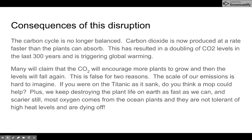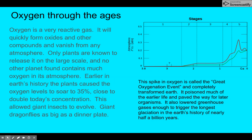Also, we aren't planting more life — we're taking it away as fast as we can. Scary still, most oxygen comes from ocean plants, and they are not tolerant of high heat levels and are dying off. So we're seeing a die-off in the ocean, which produces most of our oxygen, and it will start producing CO2 instead.